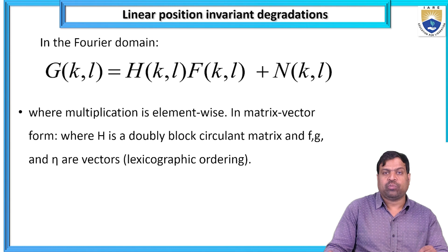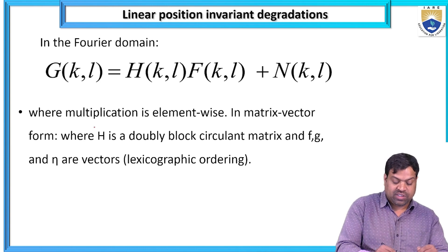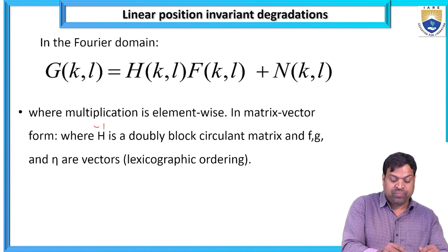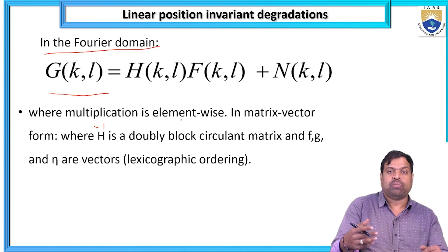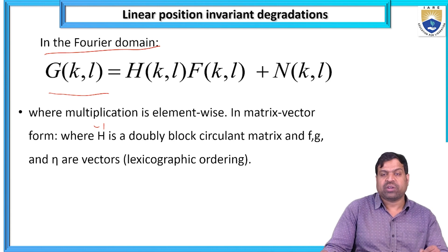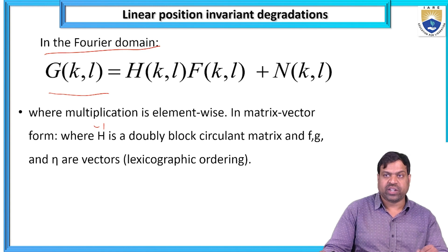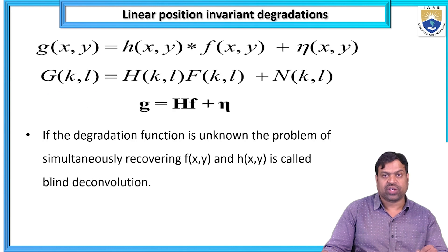For the Fourier domain, the same equation in the form of Fourier domain is: G(k,l) = H(k,l)·F(k,l) + N(k,l), where multiplication is element-wise in matrix-vector form, H is a W block circulant matrix, and f, g, and μ are vectors.